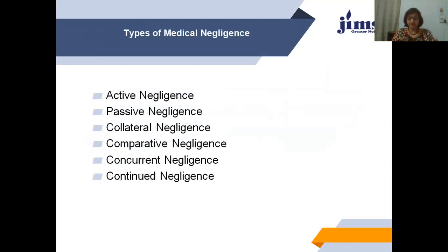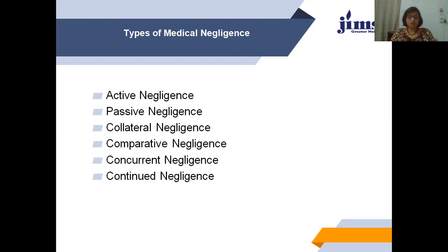Active negligence: this kind of negligence happens due to lack of proper training and knowledge, where the action itself is wrong from the origin — for example, giving an injection on the wrong side. Passive negligence: this type of negligence occurs because of no action or omission of an act — for example, a doctor giving an injection without knowing the patient's history of allergy.